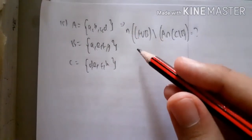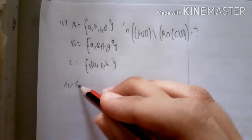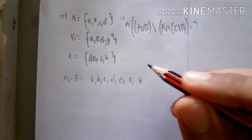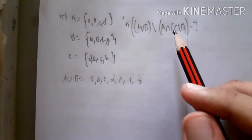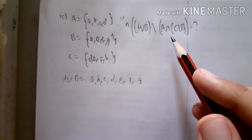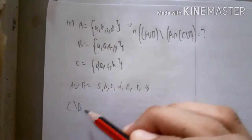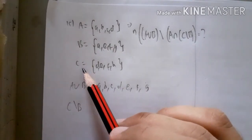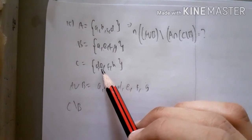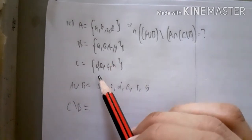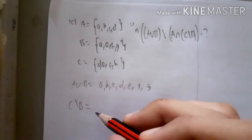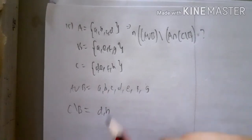A∪B gives elements {a, b, c, d, e, f, g} because union means combining the two sets. Now we calculate C complement B, meaning the elements of C that are not inside set B. So C complement B gives {d, h}.